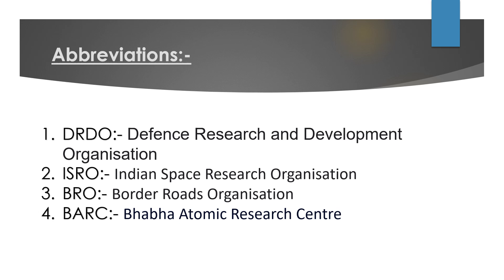Some abbreviations from the previous question: DRDO stands for Defence Research and Development Organisation; ISRO stands for Indian Space Research Organisation; BRO stands for Border Roads Organisation; and BARC stands for Bhabha Atomic Research Centre. We share these because knowing the full expansion of a term makes it easier to understand its meaning and memorize it in an exam context — these are very important abbreviations you can come across in your exam paper.